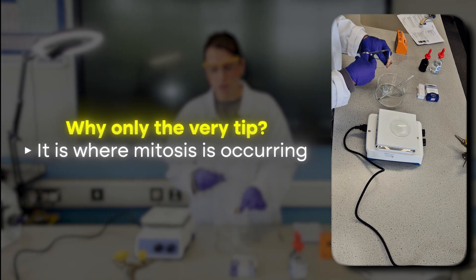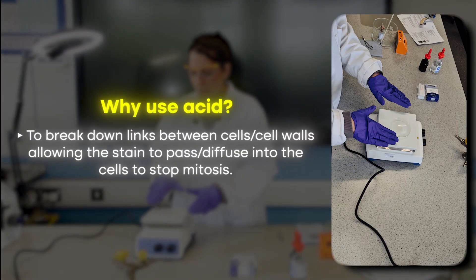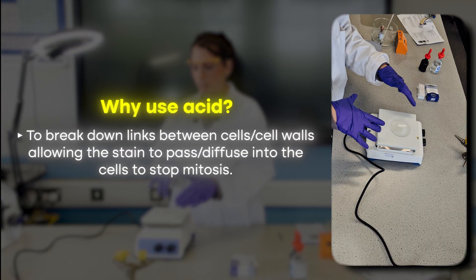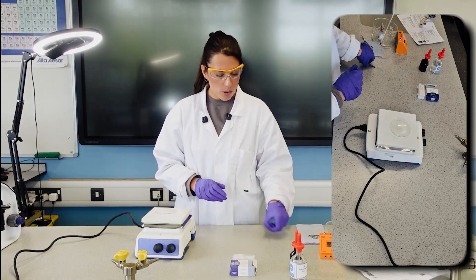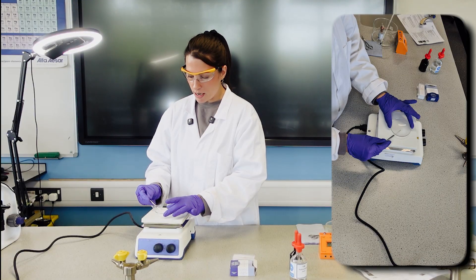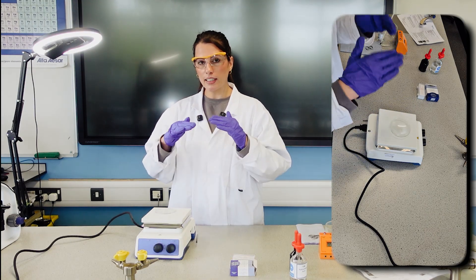I took three root tips and placed them onto this watch glass with a few drops of acid. It's been heating on this heating mantle at about 50 degrees for over 15 minutes. I also use the mounted needle to help macerate it.